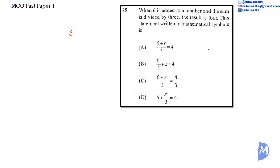When 6 is added to a number, 6 plus x. And the sum, the result of this addition, is divided by 3. So this addition is divided by 3. The result is 4, is equal to 4. 6 plus x all divided by 3 is equal to 4. The answer is A.